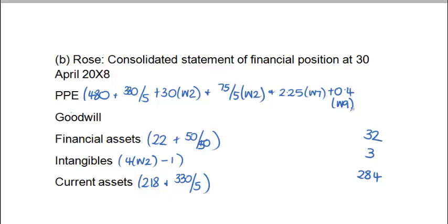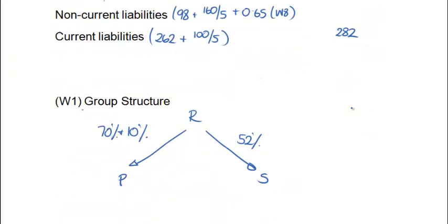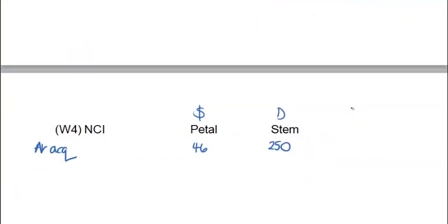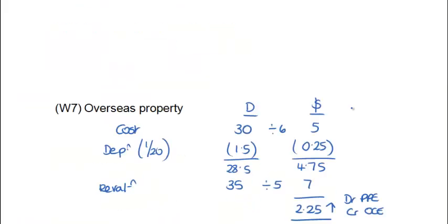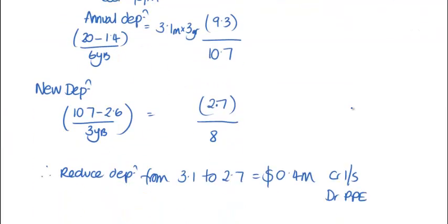The figure of 8 million that we've got for the asset is of no particular relevance, because that's already included in the figure of 480 million that Rose already has for its group assets. So we're only going to adjust for the movement in the depreciation charge itself. Our adjustment was simply debit PPE with the increase of 0.4 and credit the income statement.